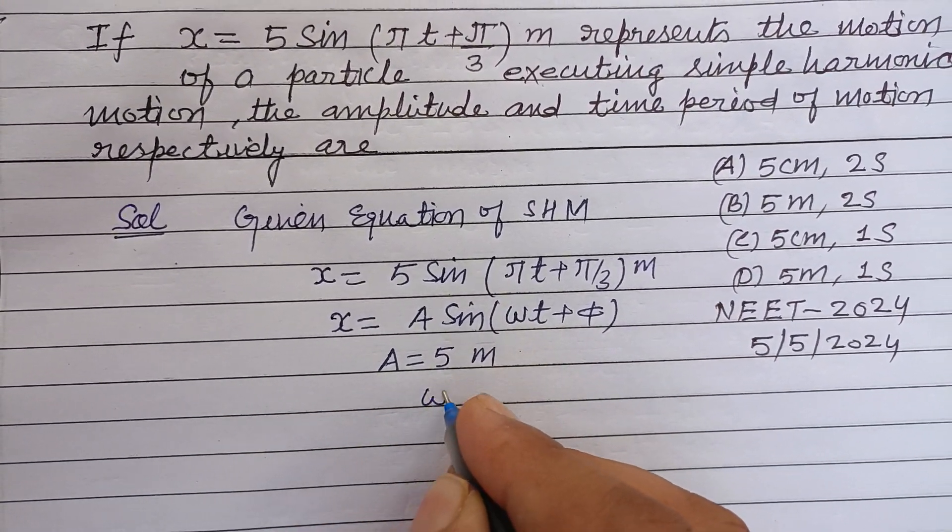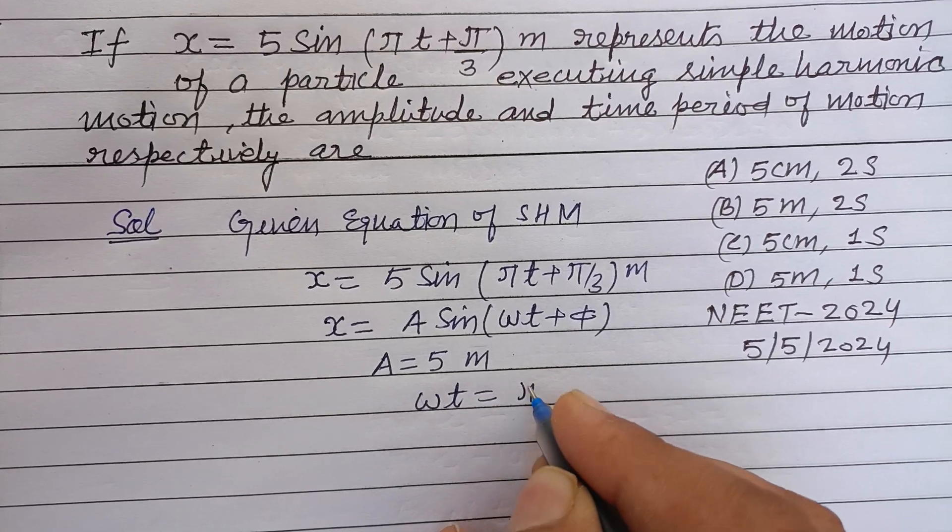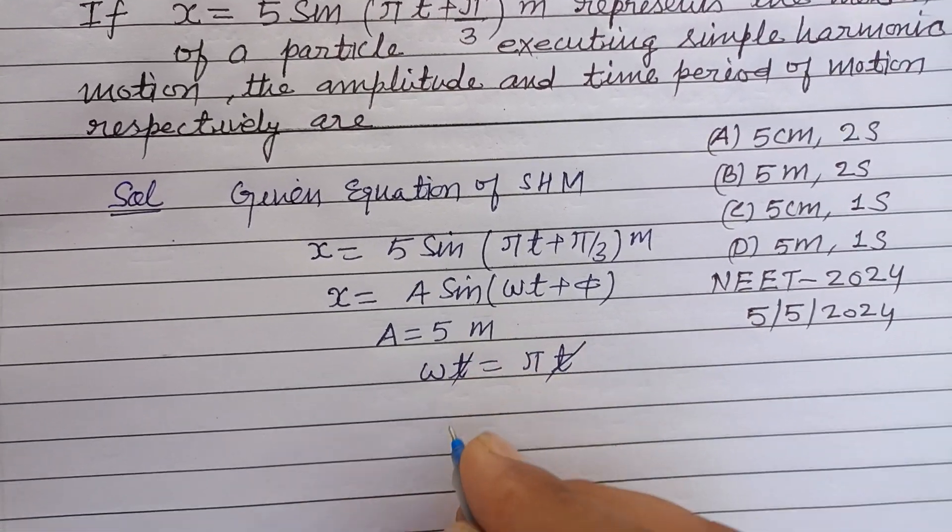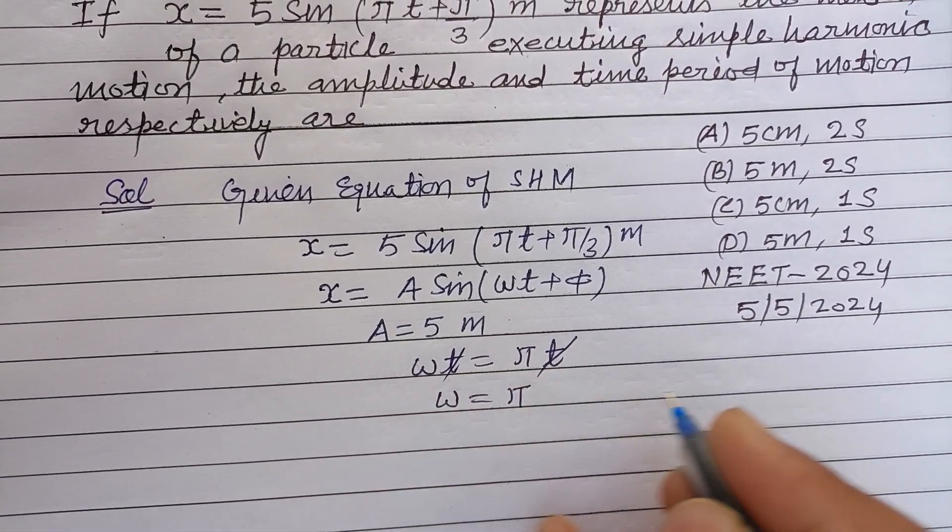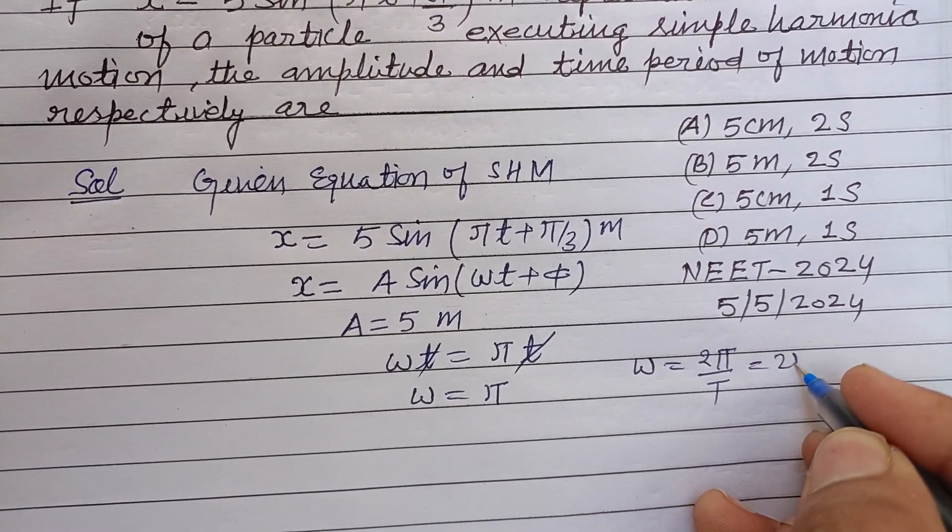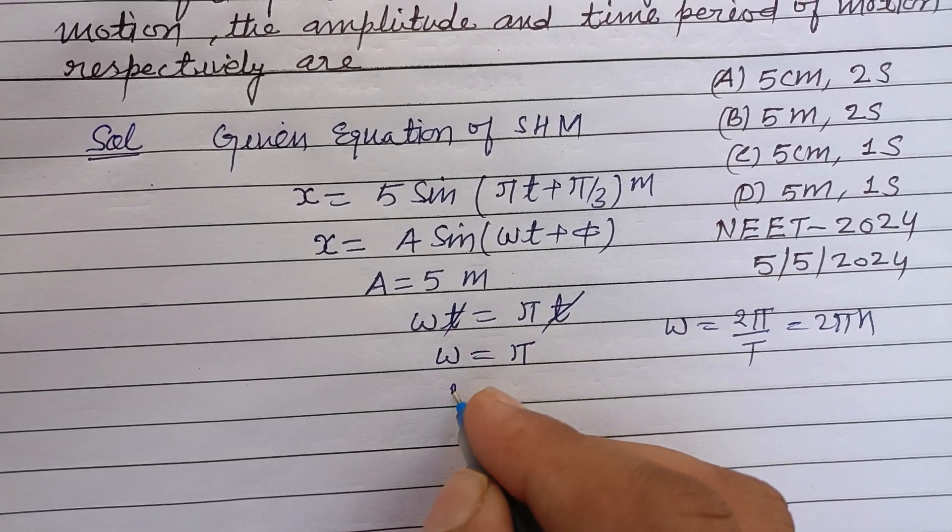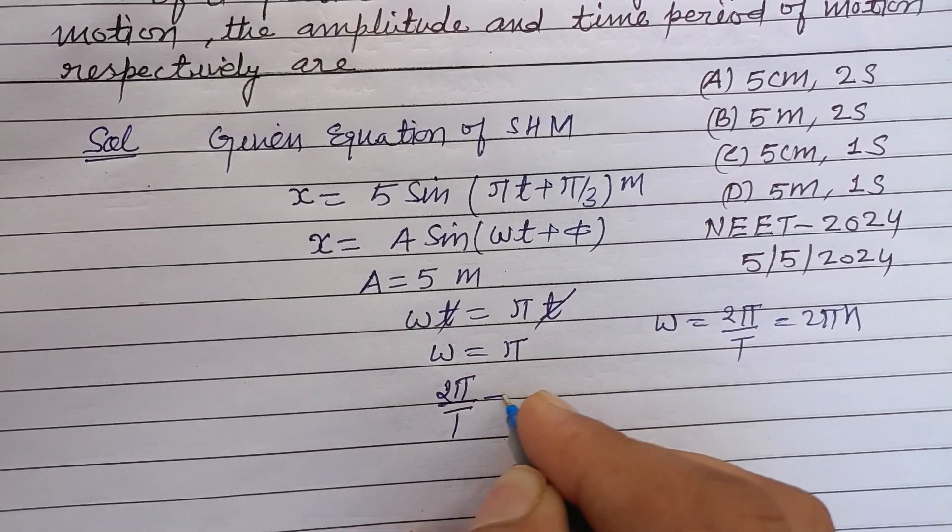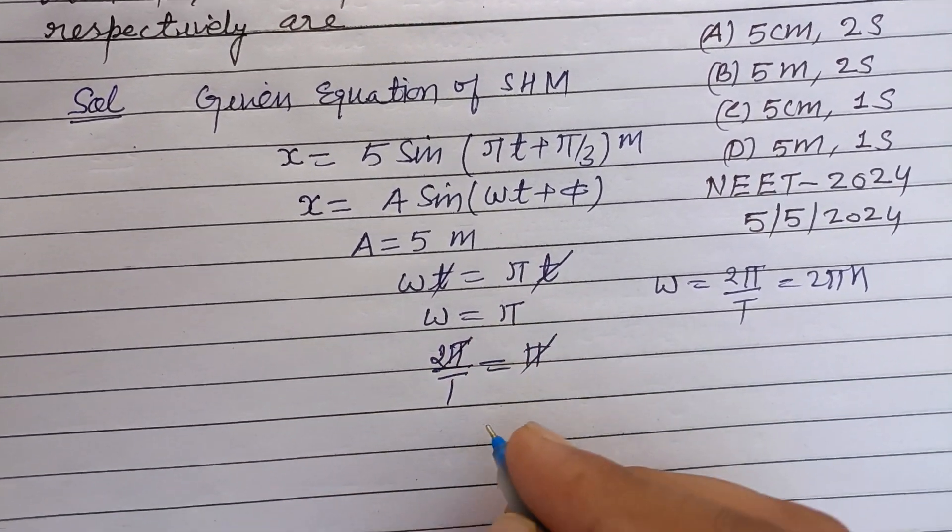And ωt equals πt. T cancels, ω equals π. And you know that ω equals 2π/T or 2πn. So putting 2π/T equals π, π cancels.